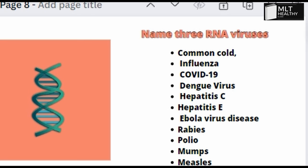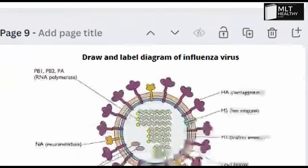RNA viruses include: common cold, influenza, COVID-19, dengue virus, hepatitis C, hepatitis E, Ebola virus, rabies, polio, mumps, measles. These are the RNA viruses.